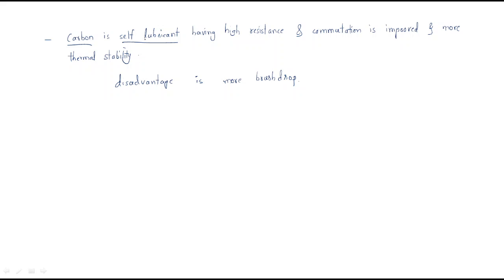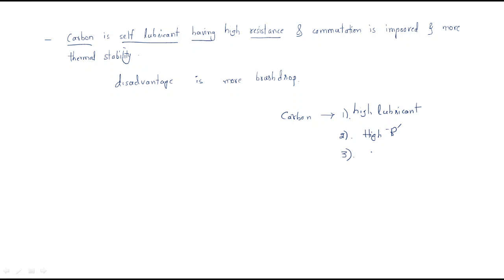Carbon is a self-lubricant material. It can allow water content and has high resistance. The characteristics of carbon are: it is a high lubricant material, it has high resistance, and commutation is also improved. It also has good stability.